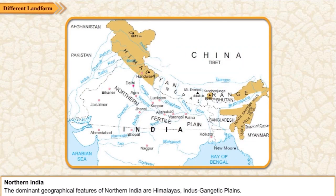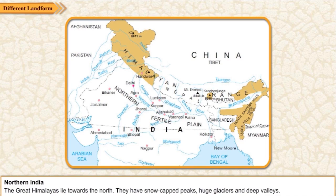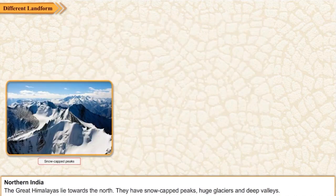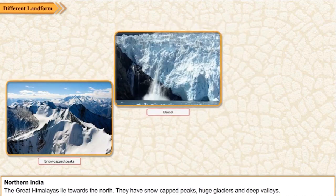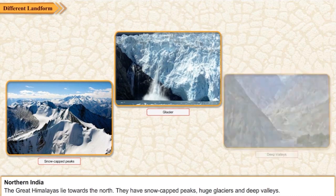The dominant geographical features of Northern India are the Himalayas and the Indus-Gangetic Plains. The great Himalayas lie towards the north, and they have snow-capped peaks, huge glaciers, and deep valleys.